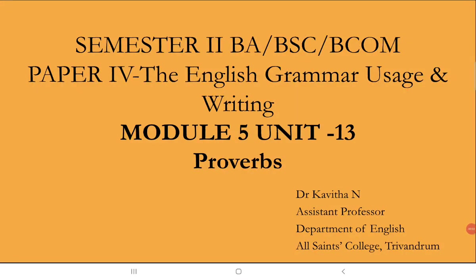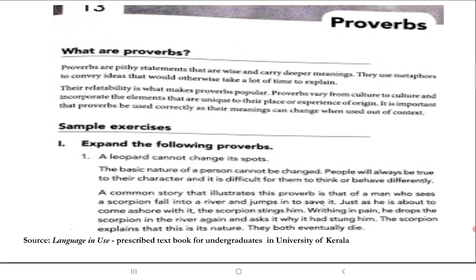Dear students, let us look into Module 5, the last module in your grammar textbook. In Module 5 you have three units, and this is the first unit — Unit 13 — which deals with proverbs. You might have done proverb expansion in your school classes. Here you might get paragraph questions on proverb expansion: you will be given a proverb and need to expand it with suitable anecdotes to make it more meaningful and effective.